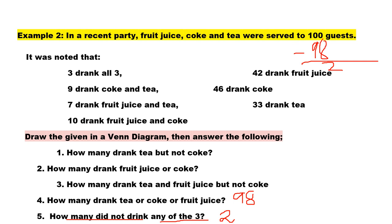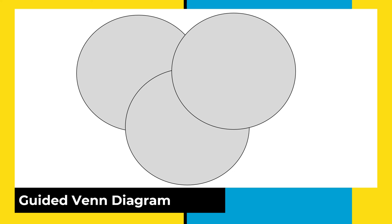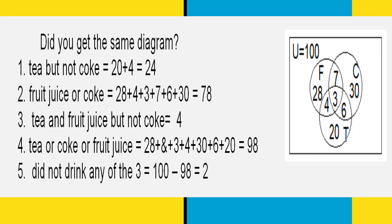That is how easy it is to solve problems on three sets. Once again, you are going to make a Venn diagram with three overlapping circles first. Hopefully, you were able to get this right. If your answer matches exactly, it means you are already skilled at making Venn diagrams and solving problems involving three sets. Congratulations! Thank you.